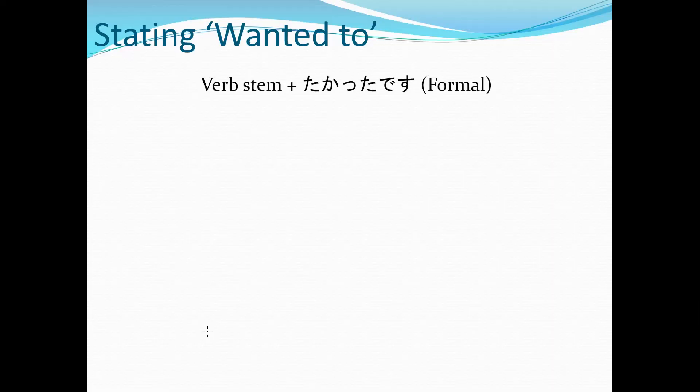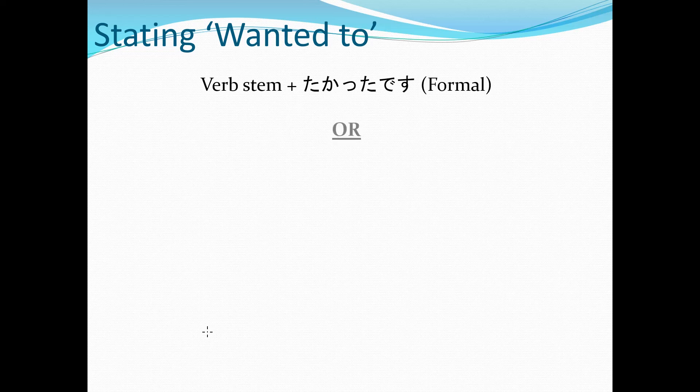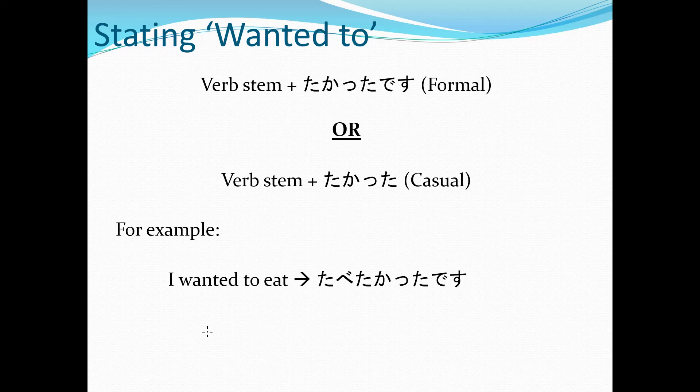Stating wanted to: Verb stem plus たかったです—that's in a formal situation. Or verb stem plus たかった—that's if it's a casual situation with your mates and stuff. For example, I wanted to eat? 食べたかったです. I wanted to drink? 飲みたかった.